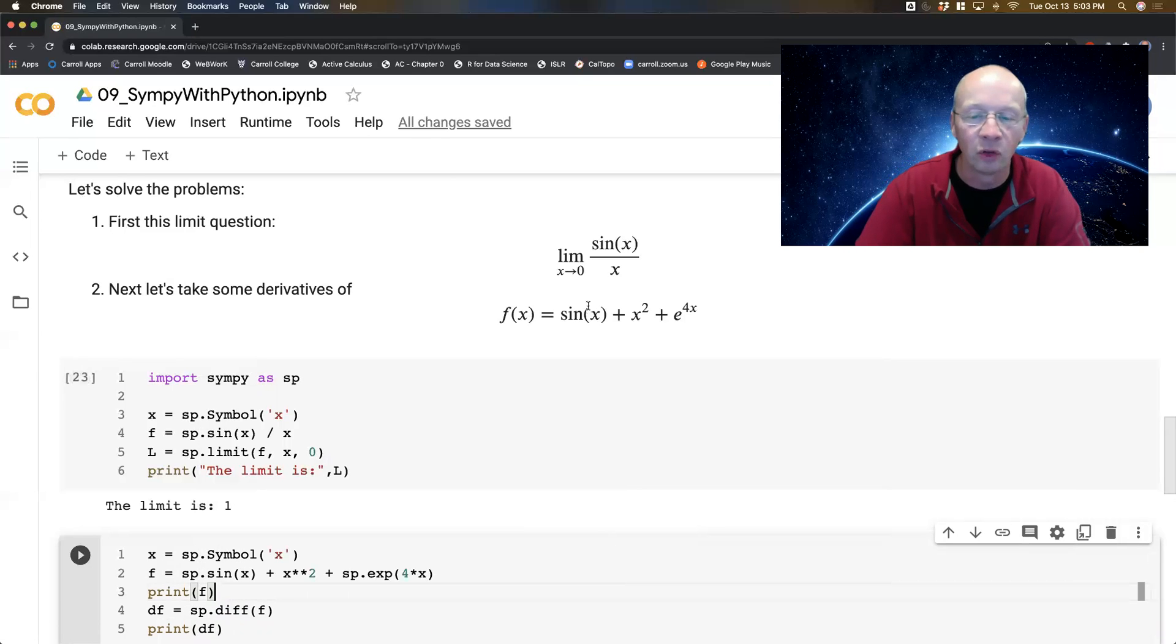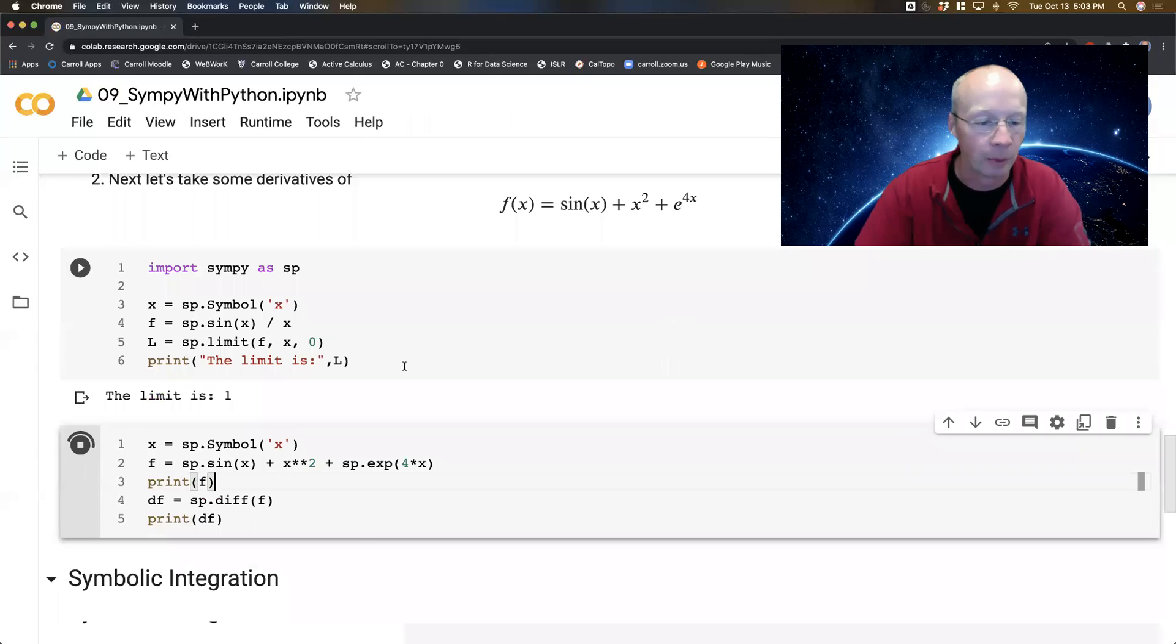Now I should have some notion as to what the right answer might be. So the derivative of this should give me a cosine, should give me a 2X, and should give me a 4E to the X. Let's see what happens. I got a 2X, I got a cosine, and I got a 4E to the X. Beautiful.